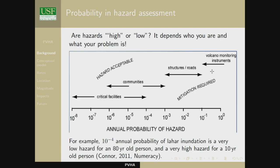People actually make that decision. Harry Truman at Spirit Lake on Mount St. Helens, in his 80s, basically said he was not leaving, and died in the eruption. He was weighing his chances given his time in life — maybe not in a very quantitative way. But nobody would say a 10-year-old should stay on the flanks of Mount St. Helens.